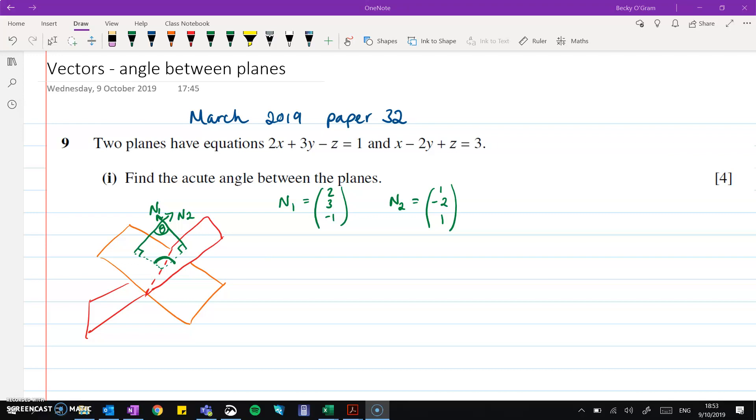The vectors for the normals to those two planes straight off of the equations of the planes here, just by reading the coefficients of x, y, and z to make those. And then we will use the scalar product to find cos theta for the angle between those two. So if we start off with doing the scalar product or dot product of those two vectors, then we will get the answer of minus 5.